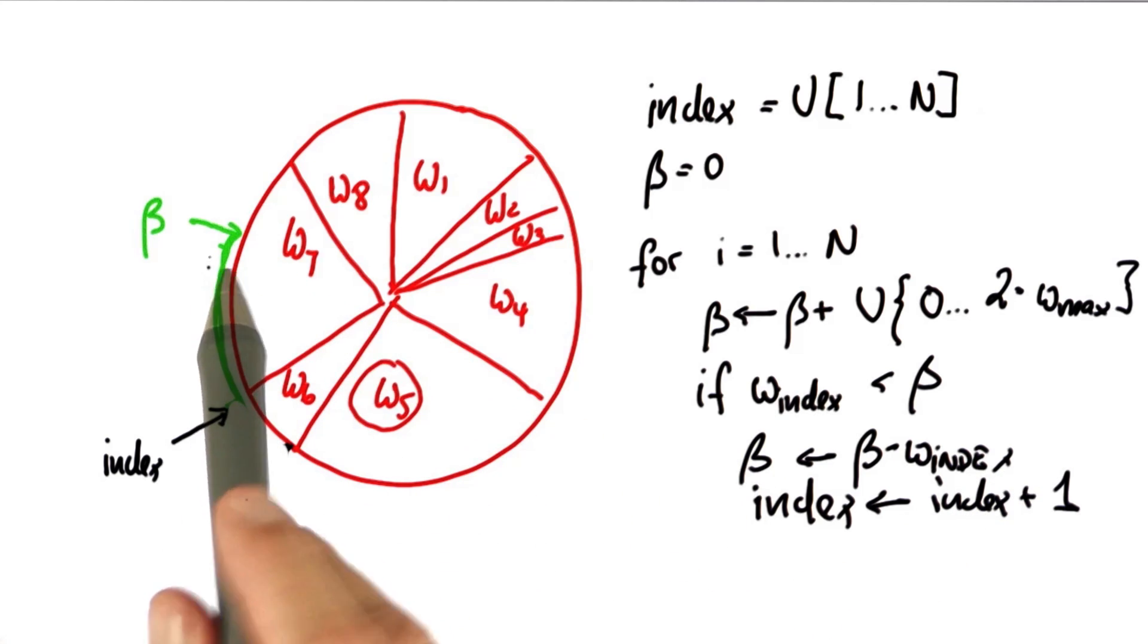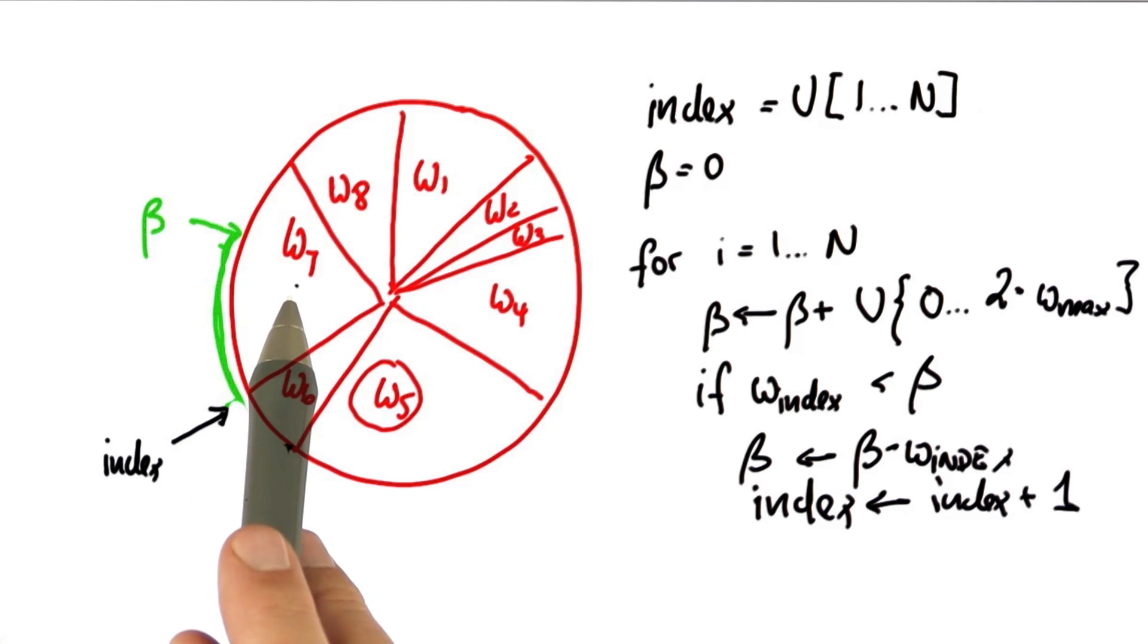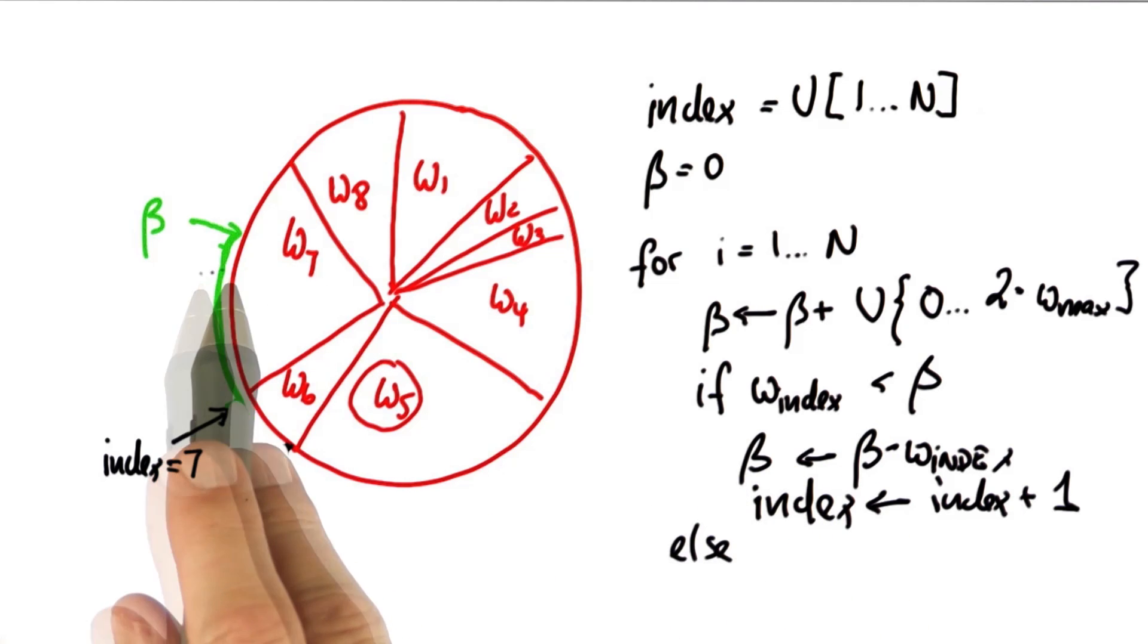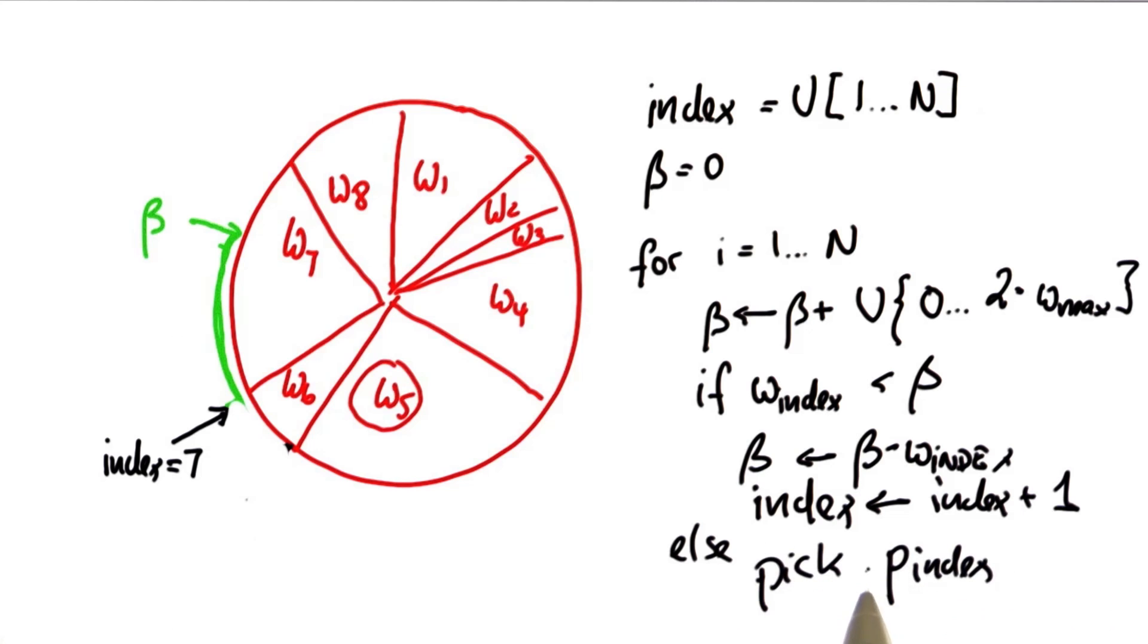When I now get to the point where beta becomes smaller than W_index, which is the case in the next iteration, now index equals 7, then index is the index of the particle I pick in my resampling process. So pick the particle index.